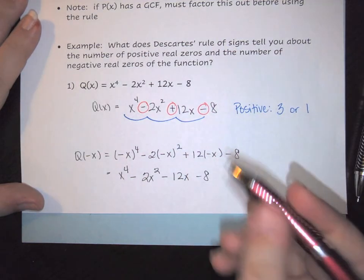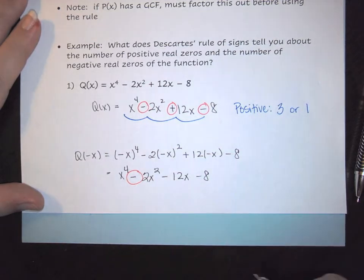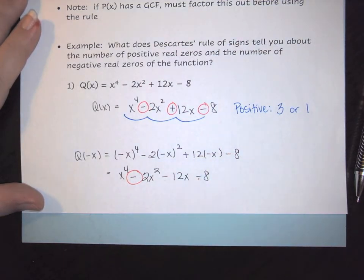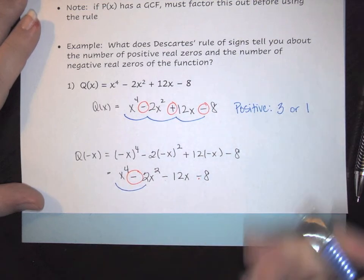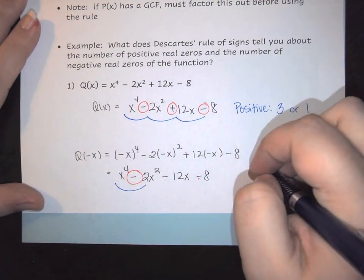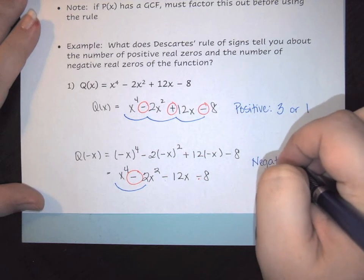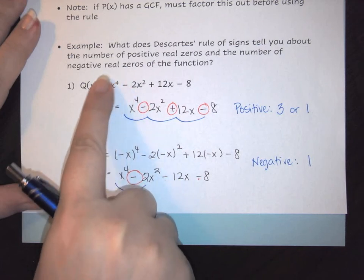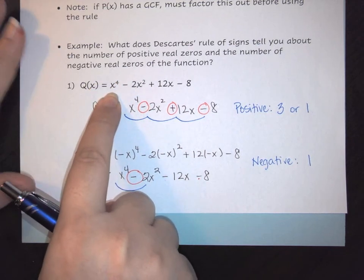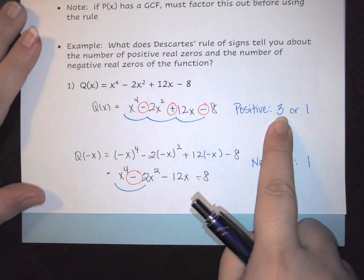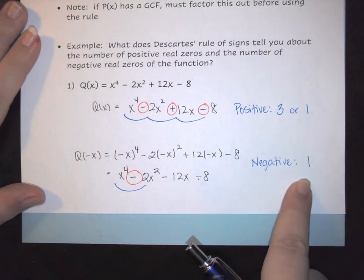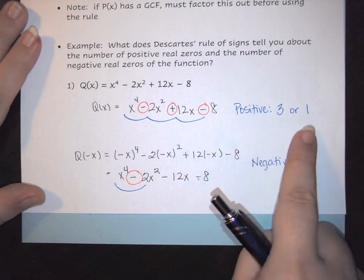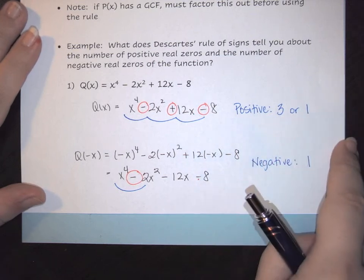Looking at that, we go positive to negative, but then negative and negative. The only change we have is positive to negative, which is 1. So the number of negative zeros is 1. Notice we have a power of 4, so we have either 3 positive zeros or 1 positive and 1 negative.